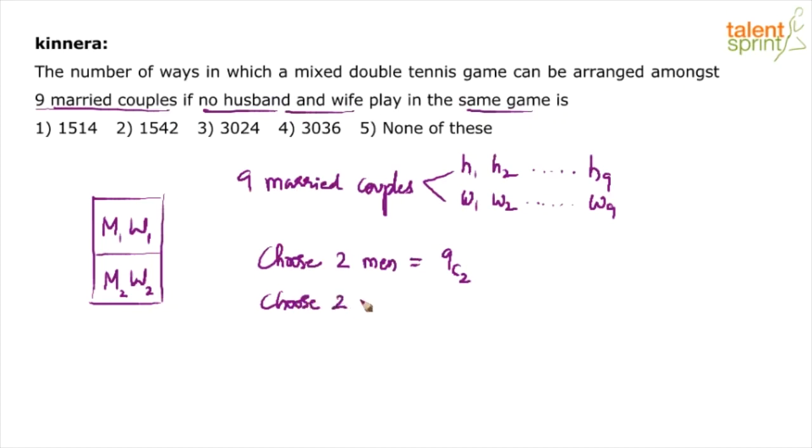Choose two women. In how many ways can you choose two women? See, total there are nine women. We can do it in nine C two ways. But understand, we don't want the wives of these two men to be chosen. We have chosen two men. We don't want their wives to be chosen.